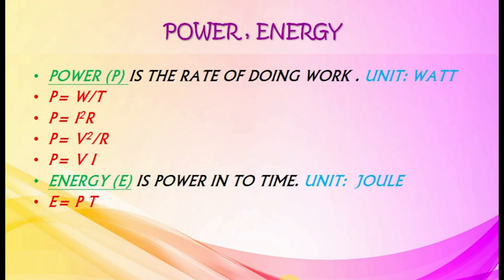Power P is the rate of doing work. Unit is watt. Power equals work by time. P equals I squared R. P equals V squared by R. P equals V into I. Energy is power into time. Unit is joule.